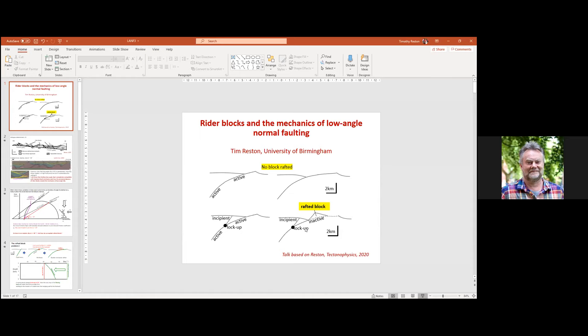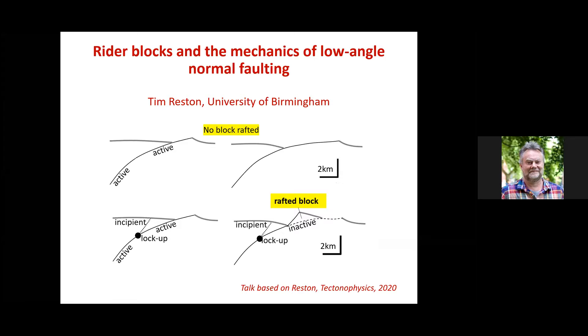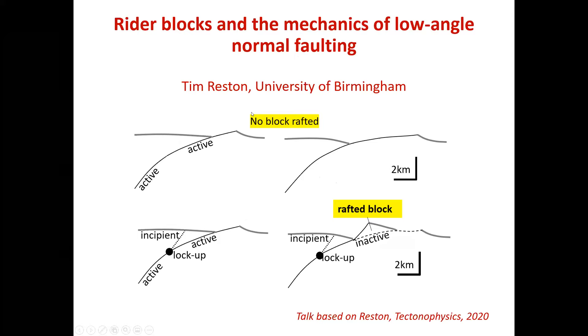That was two very interesting talks doing very clever things. I'm going to do something very unclever but hopefully it's of interest. So I'm going to talk about rider blocks and the mechanics of low angle normal faulting and the question is why on some flexing normal faults do we see rafted blocks and on others we don't.